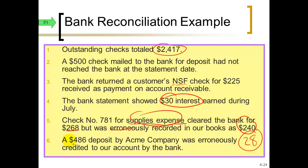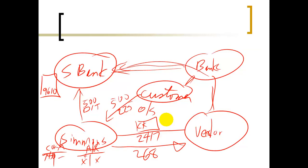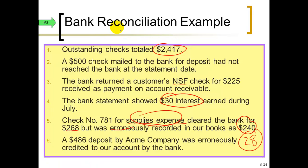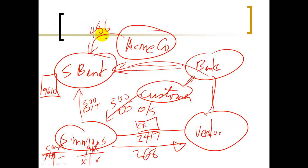Item six: a $486 deposit by Acme Company was erroneously credited to our account by our bank. We're Simmons, not Acme. The bank mistakenly increased our balance by $486, but we didn't record it because we didn't know. Since it's a bank error, we fix up the bank's balance on the reconciliation — not ours — by subtracting that $486 deposit from the bank balance.